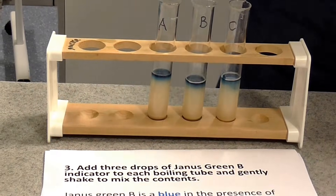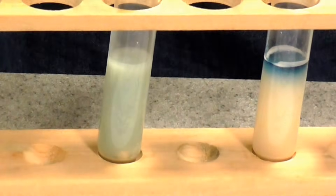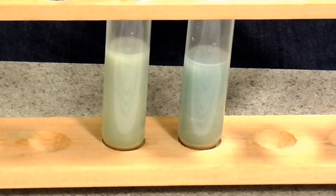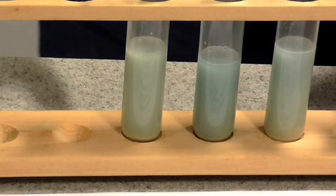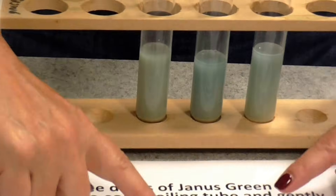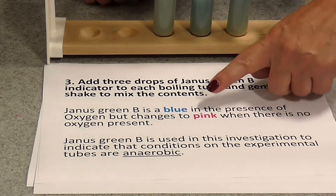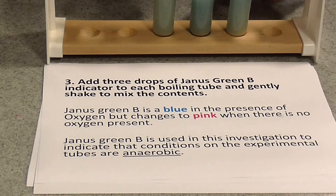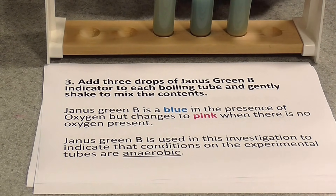At this stage, give each tube a little shake to mix the contents. Janus Green is an indicator which is blue in the presence of oxygen, but it changes to pink if there is no oxygen present. We're going to use Janus Green so that we know when conditions in our tubes are anaerobic, and then we'll be recording the rate of anaerobic respiration in the yeast.